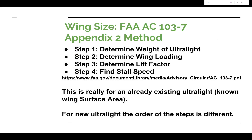The FAA has a method approved for simply calculating the stall speed of an ultralight without having to actually demonstrate it. You can find that in FAA Advisory Circular 103-7 Appendix 2. There are four steps: first, calculate the weight of the ultralight; second, knowing the weight and surface area, calculate the wing loading; third, determine the lift factor for the wing as a whole, which is similar to a lift coefficient for an airfoil; and fourth, determine the stall speed by looking it up on a graph. A URL on this slide gives more details on this method.